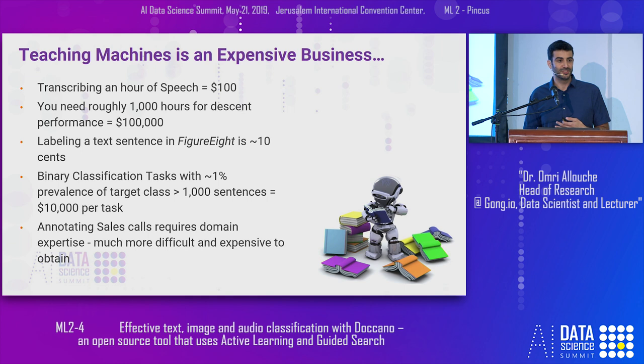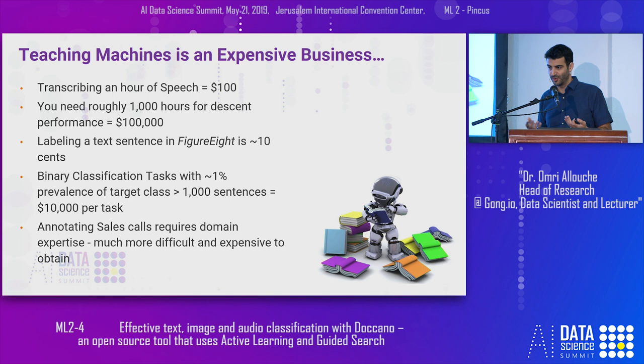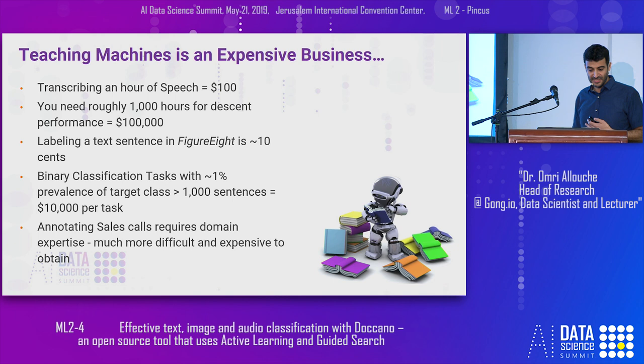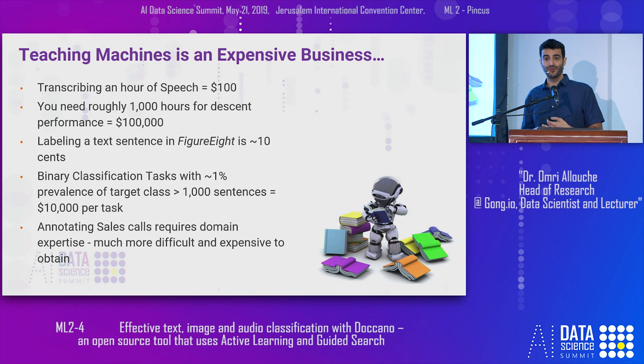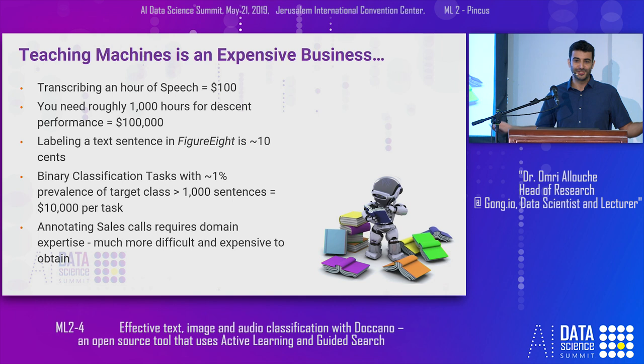Figure Eight, previously called CrowdFlower, is a top provider for labeling services. You pay around $0.10 per annotation of a text sentence. If you want around 1,000 labeled sentences with 1% prevalence in the data set, you would pay $10,000 just for a single labeling platform with one labeler. If you want an average of three or five annotators, you'd pay more if you just sample randomly. And when you're dealing with a specific domain like sales, you need domain experts, which cost much more than general crowdworkers.